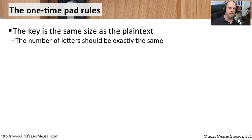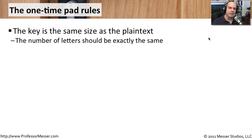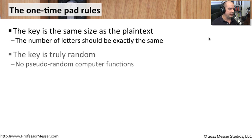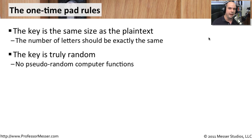For the one-time pad to be this secure, there were a few rules to keep in mind. The first is that the key — the piece of information on our pad of paper — needs to be the same size as the plain text we need to encrypt. The number of letters in the key and the number of letters in the message are exactly the same. The second rule is that the key is completely randomized — not pseudo-random or some static computer function, but a true random set of characters.